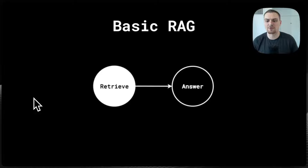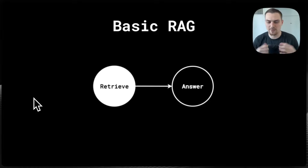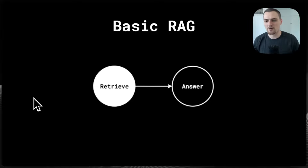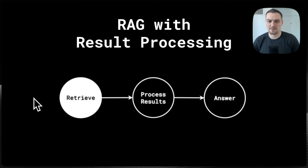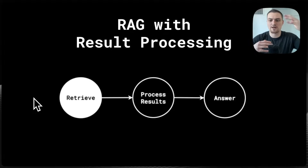Now let's graduate from basic RAG to RAG with result processing. We've added a layer to our system: take the query, pass it into retrieval, then have some kind of parametric system to process the results, and then answer the question. Say you want to summarize the context before answering it, or you have a re-ranking model that's going to resort the context. These kinds of processings before answering add one more layer to our DSPy system.